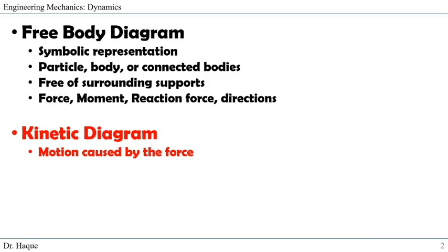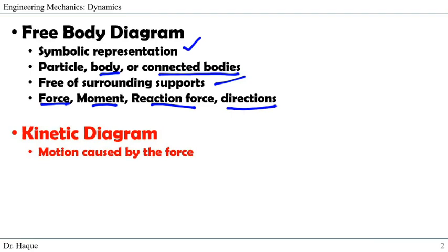Just for a refresh: a free body diagram is a symbolic representation of a particle, body, or connected bodies where we free the surrounding of that particle or connected bodies and show the forces, moments, and reaction forces along with their directions on the body. The kinetic diagram, on the other hand, shows just the motion caused by all those forces, moments, and reaction forces.